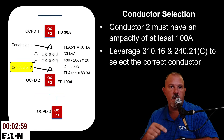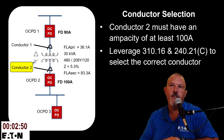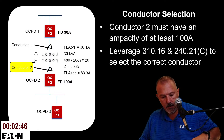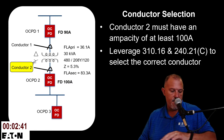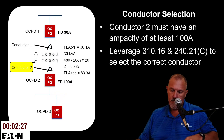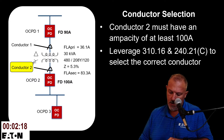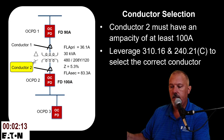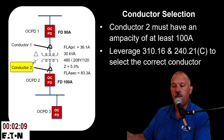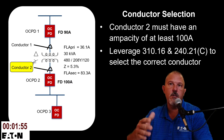For the secondary conductors — these are transformer secondary conductors, not feeders — I again use Table 310.16. With 100 amps required, a #3 AWG conductor is selected. I must also reference NEC 240.21(C), titled 'Transformer Secondary Conductors,' which specifies the conditions under which conductors may be connected to a transformer secondary without overcurrent protection at the secondary, as detailed in subsections C1 through C6. Reviewing all those requirements is left to the student.